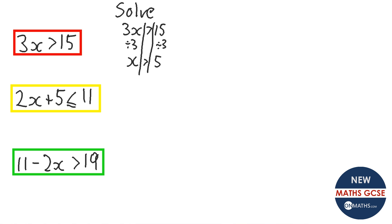Because it's so similar to solving equations with equal signs, students often write the answer as x equals 5. But recently some exams have penalised this, giving 0 marks even when the steps were correct. So make sure whatever inequality symbol is in the question is in your answer.